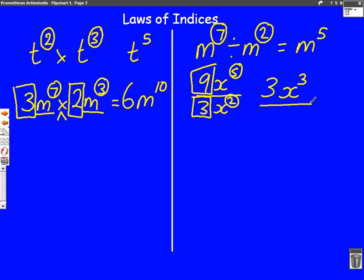We'll do one more now where there's two different letters. Let's have six m three n two times three m five n. In this question, let's do the big numbers first this time. Six times three, six times three is eighteen.